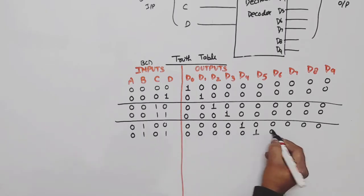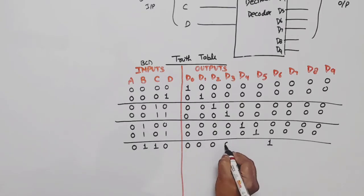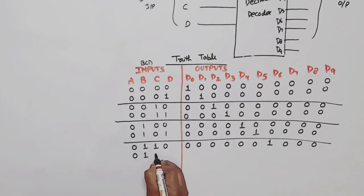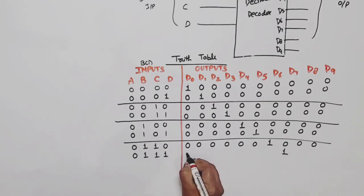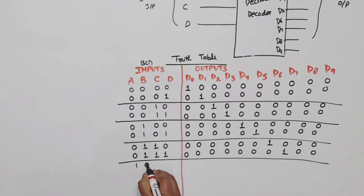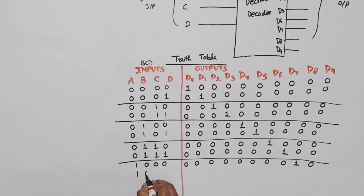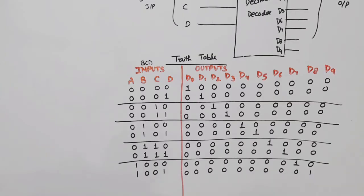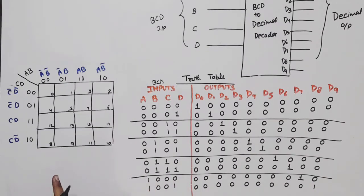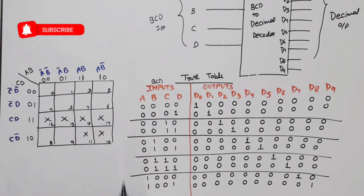Next 0101 — decimal equivalent is 5, so D5 will be high, remaining all zero. Next combination 0110 — decimal is 6, so D6 is one, remaining all zero. Next combination 0111 — decimal equivalent is 7, so D7 will be high, remaining all zero. Next 1000 — decimal 8, this will be one, remaining all zero. And last, since BCD numbers go only 0 to 9, 1001 is 9. Combinations 10 to 15 are don't cares.